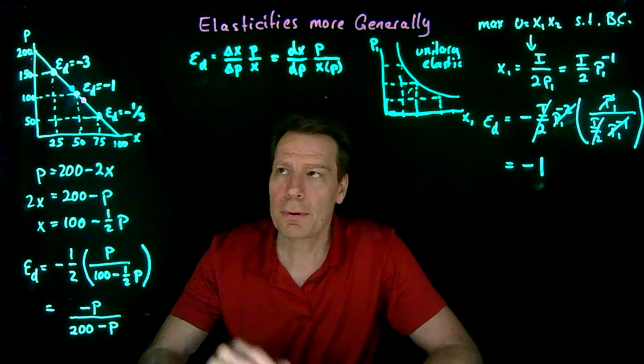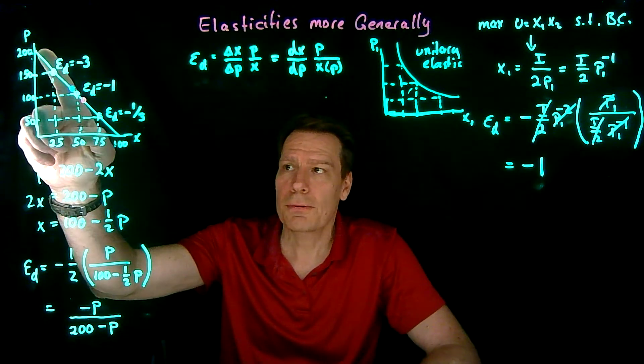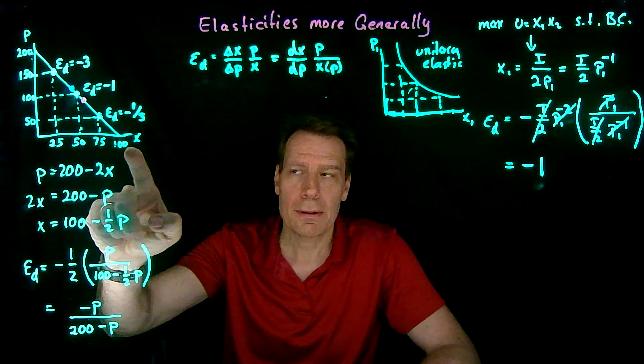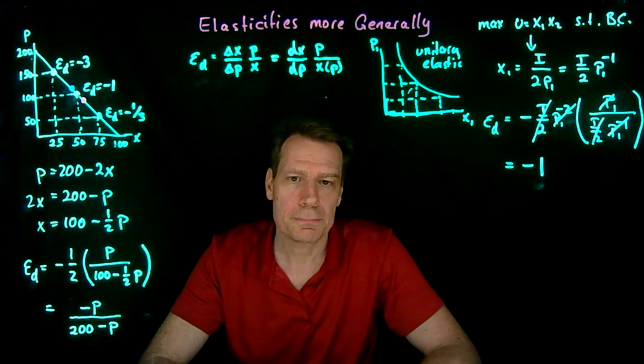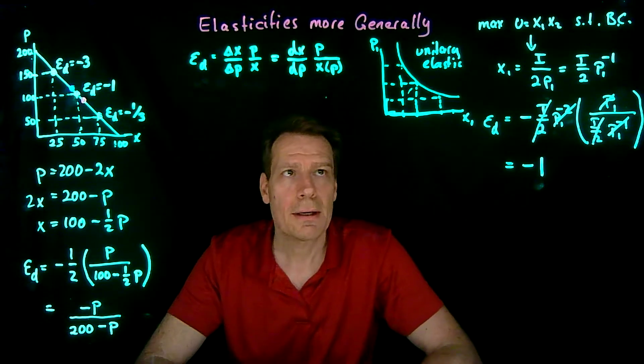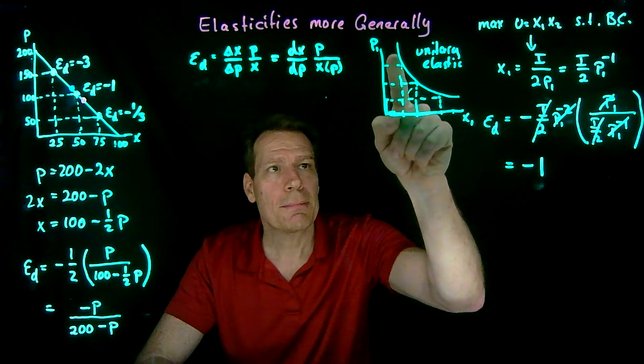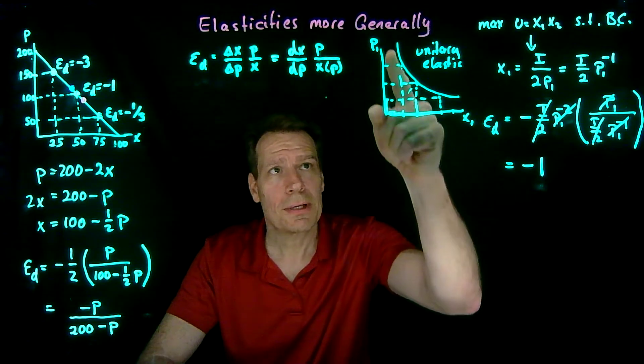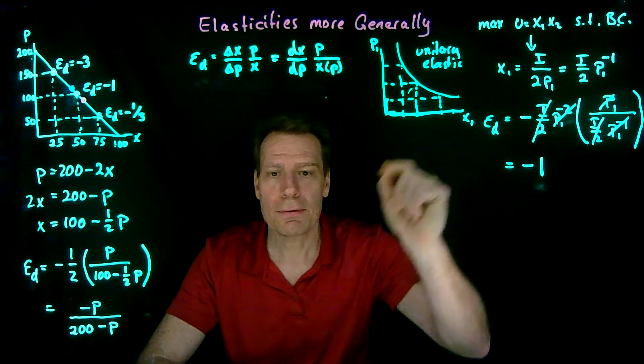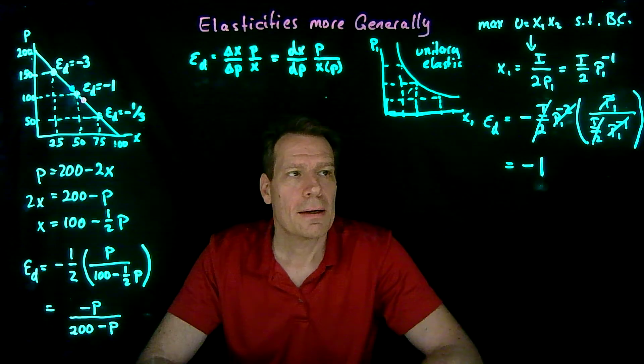So we've now seen an example of a demand curve where the slope is the same everywhere, which means the price elasticities are not going to be the same everywhere. They're going to be different at every point. And now we have a demand curve where the elasticity is the same everywhere, and we can see that the slope is going to be different everywhere.